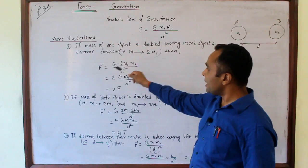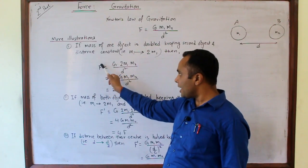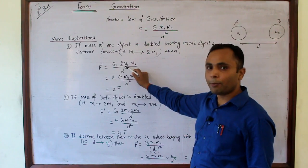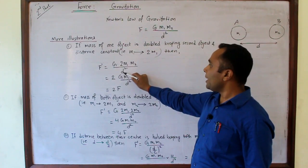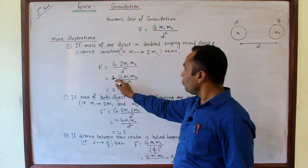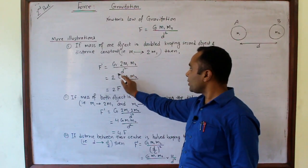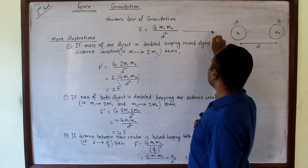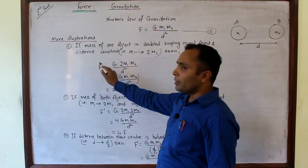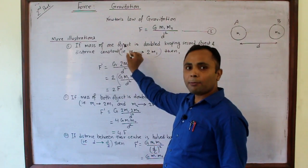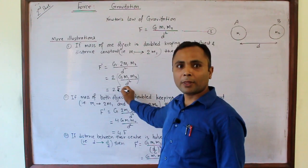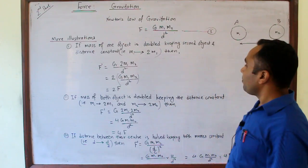Then the force of gravitation at that time is represented by F dash. F dash = G × 2M1 × M2 / D². It becomes 2GM1M2/D². This whole quantity, according to the first relationship, is F. Therefore, the force of gravitation when the mass of one object is doubled is 2 times the original force of gravitation.